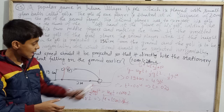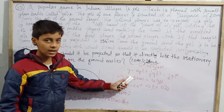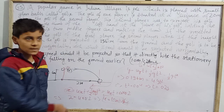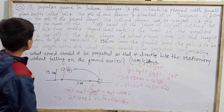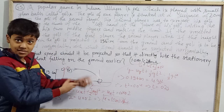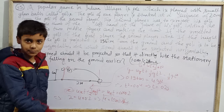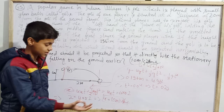If the second player fires at exactly 10 meters per second, the second player can win. So this question is solved. Now let us move to the next question.